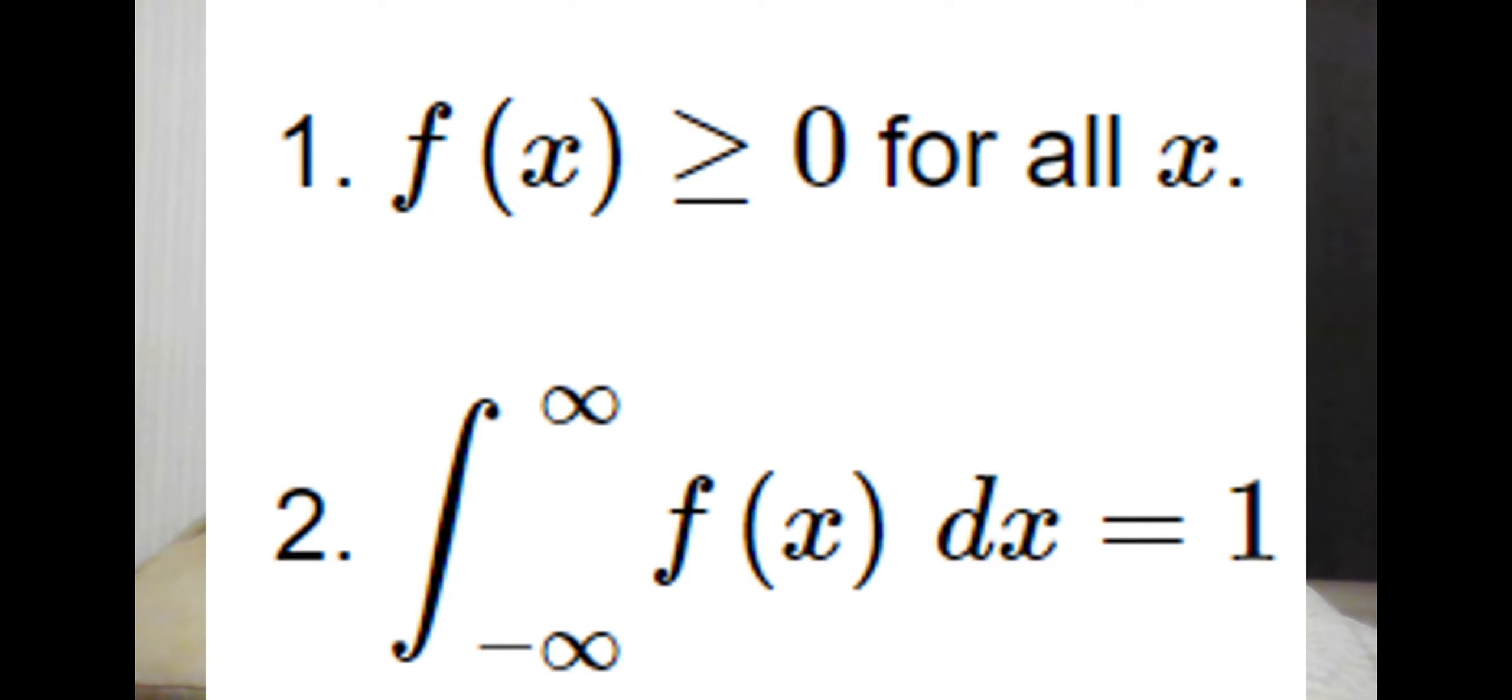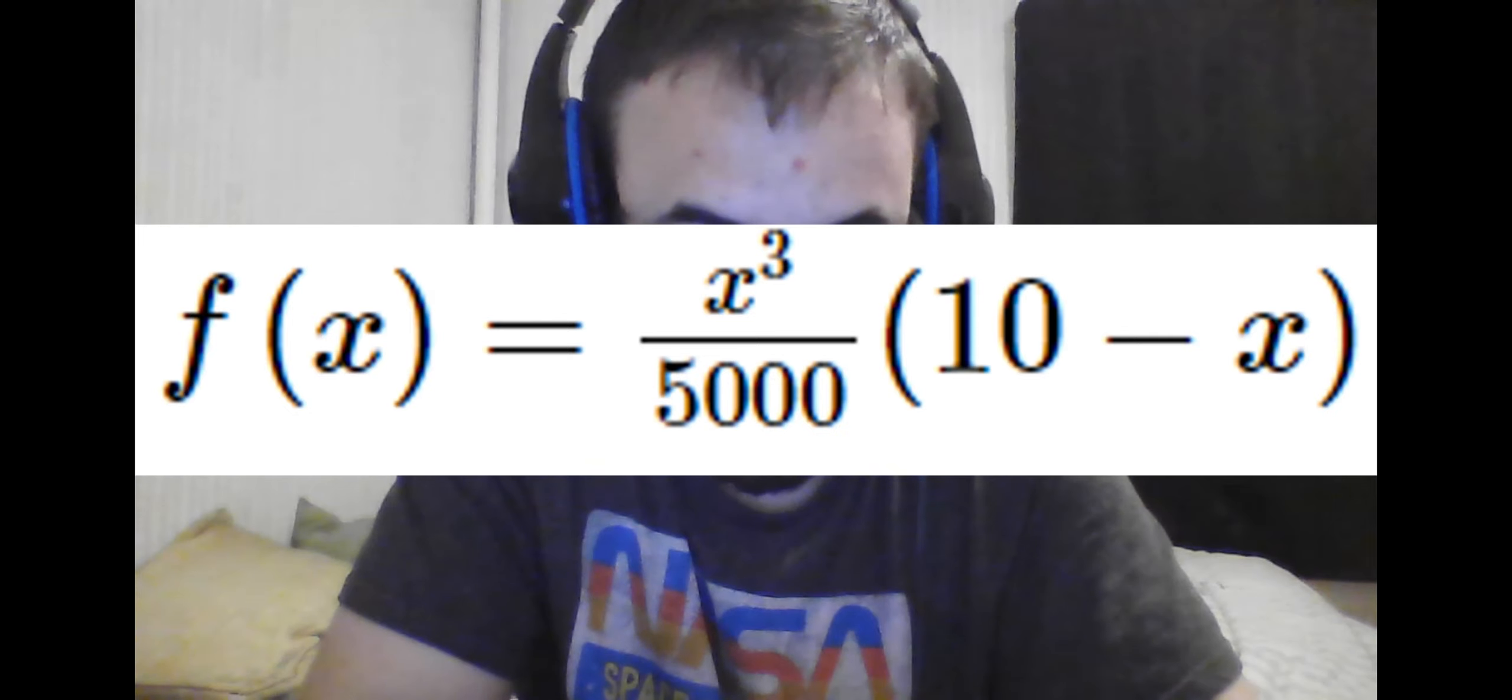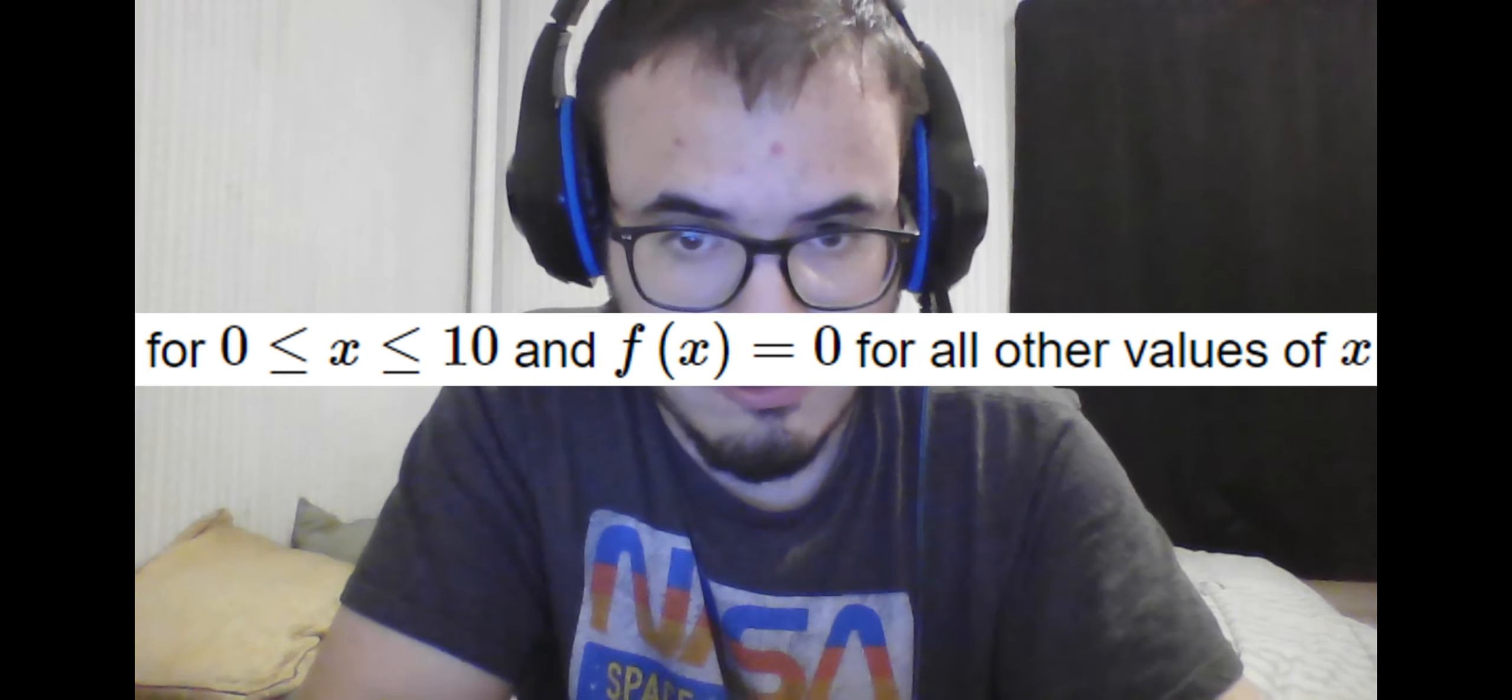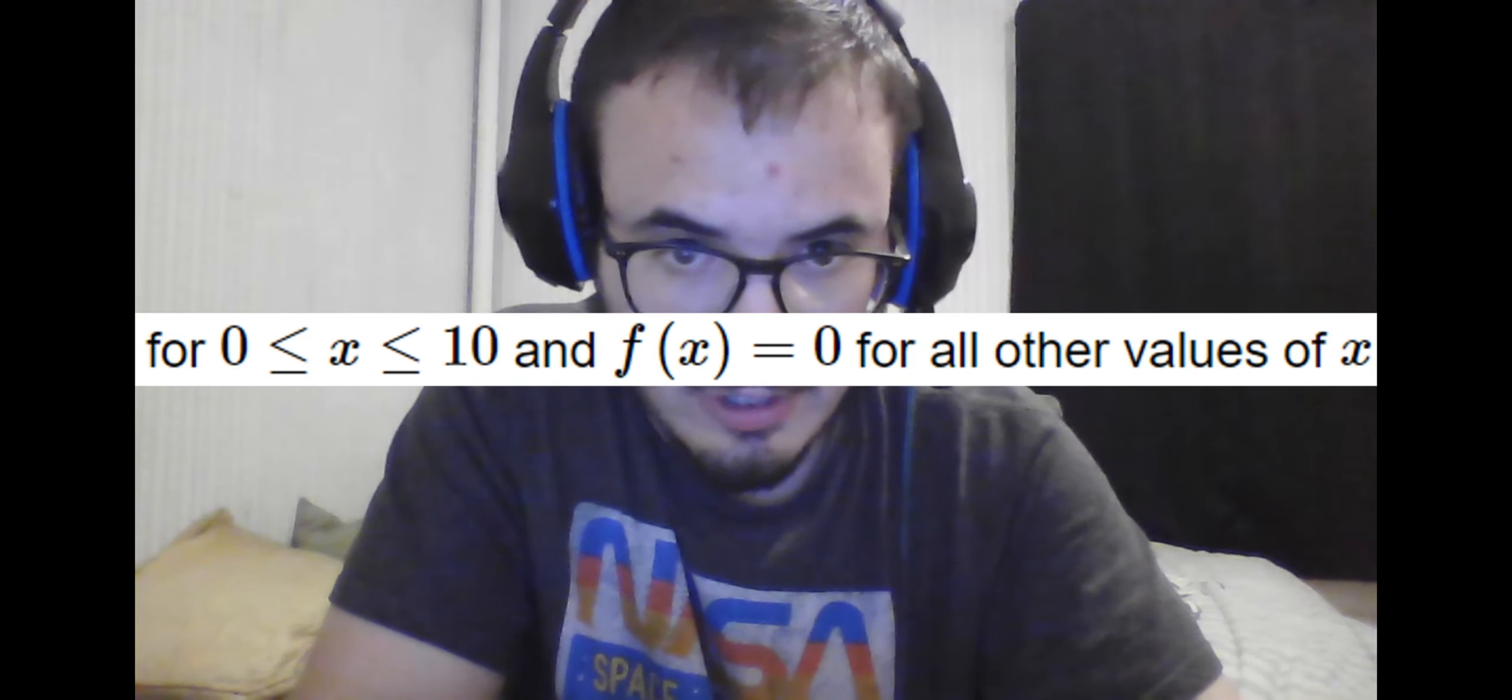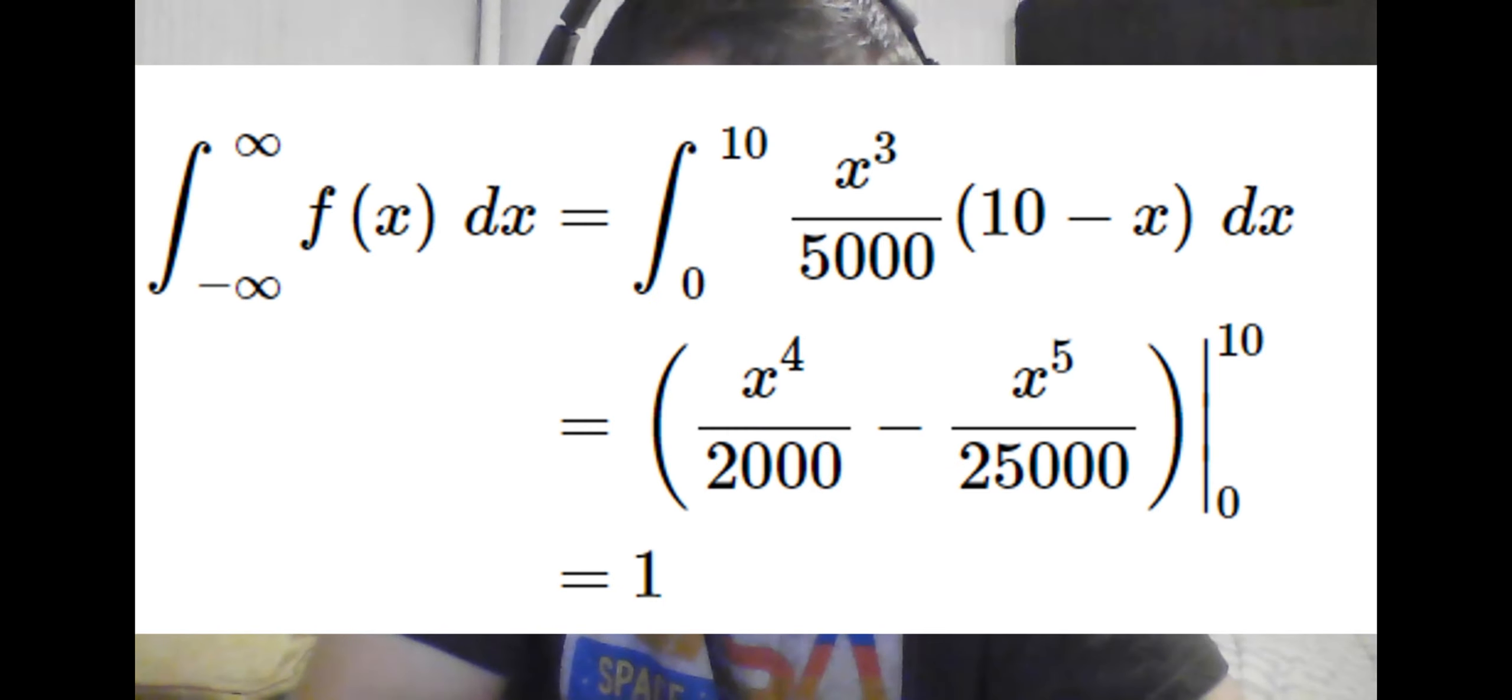For example, if we were given this function and told that it is only that function between 0 and 10 and exactly 0 for everything else, we would show that it is a probability density function by using the integral rule. Because we have the limits 0 and 10, we do not actually need infinity and negative infinity here. We only need 10 as the upper limit and 0 as the lower limit.